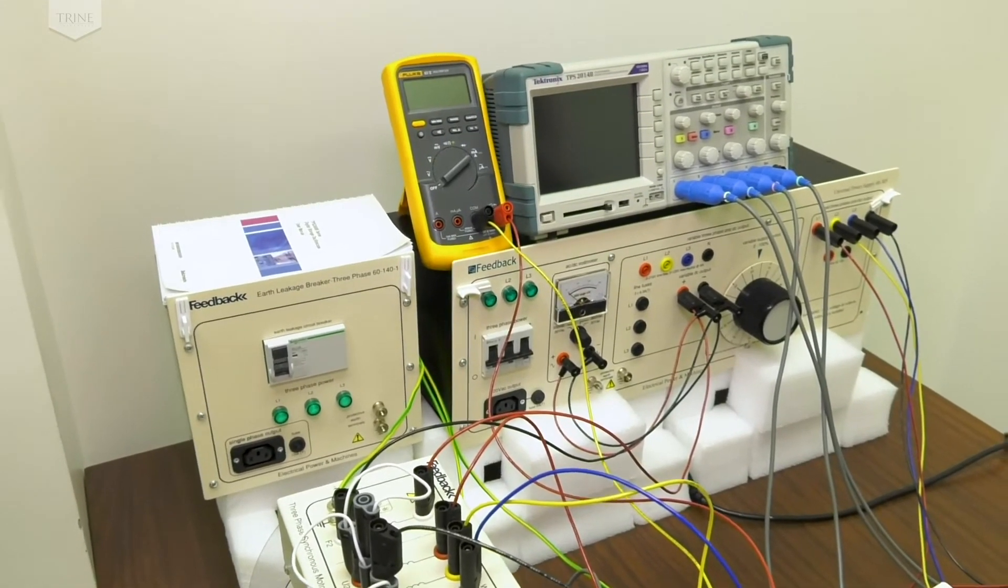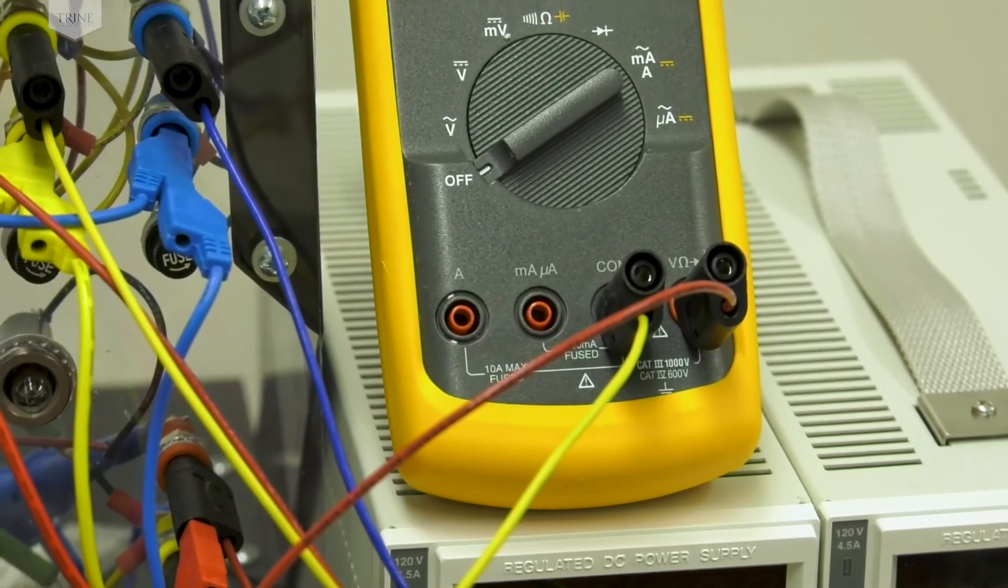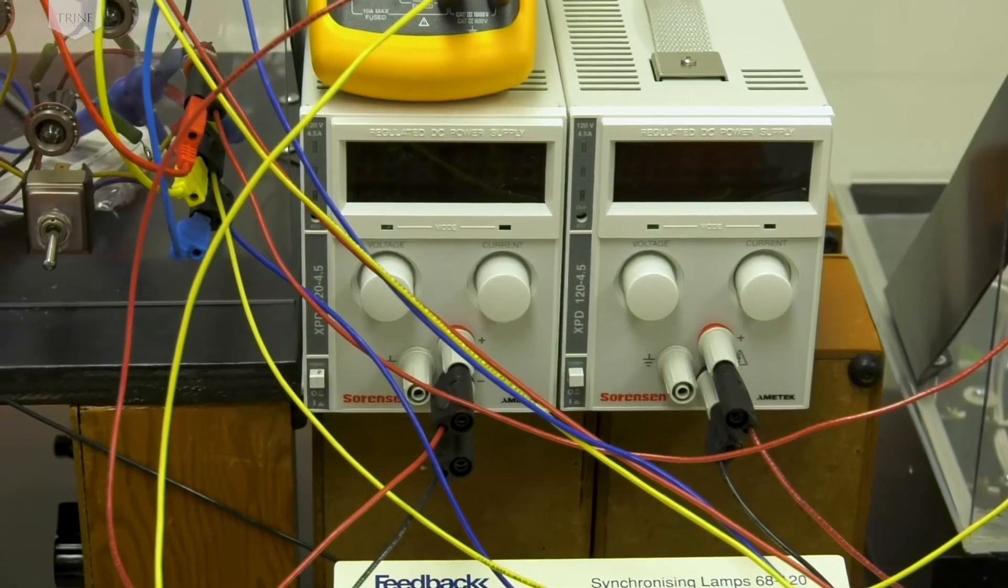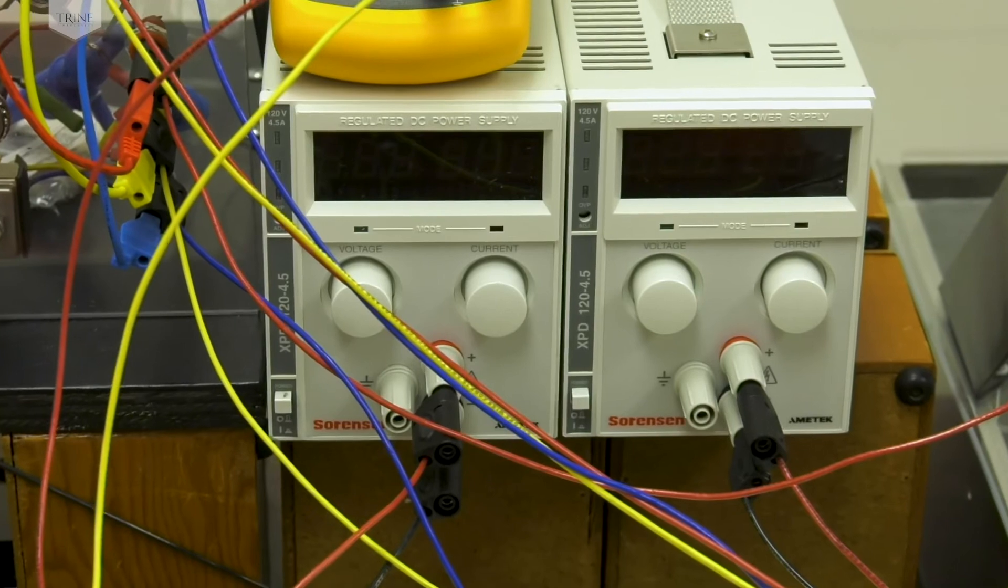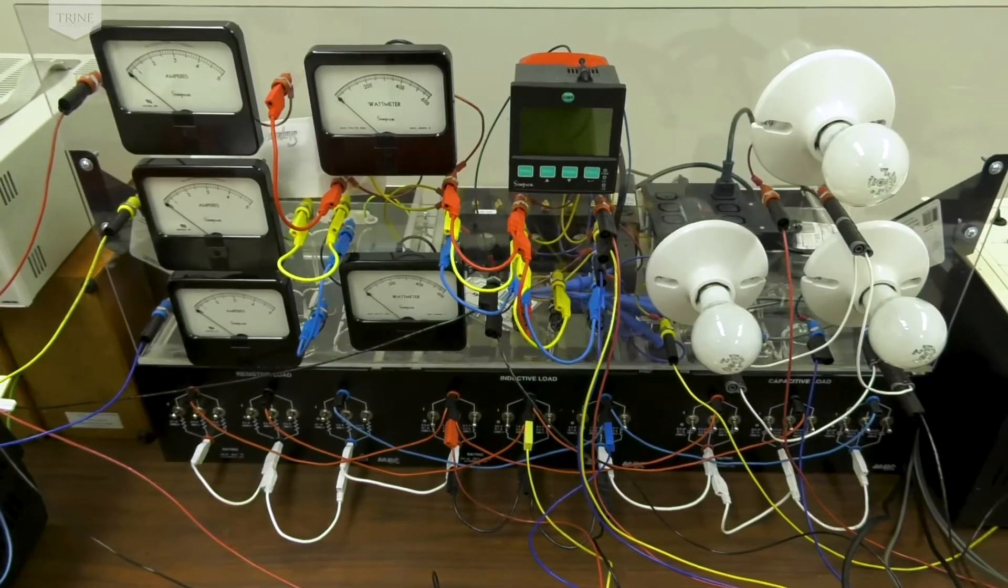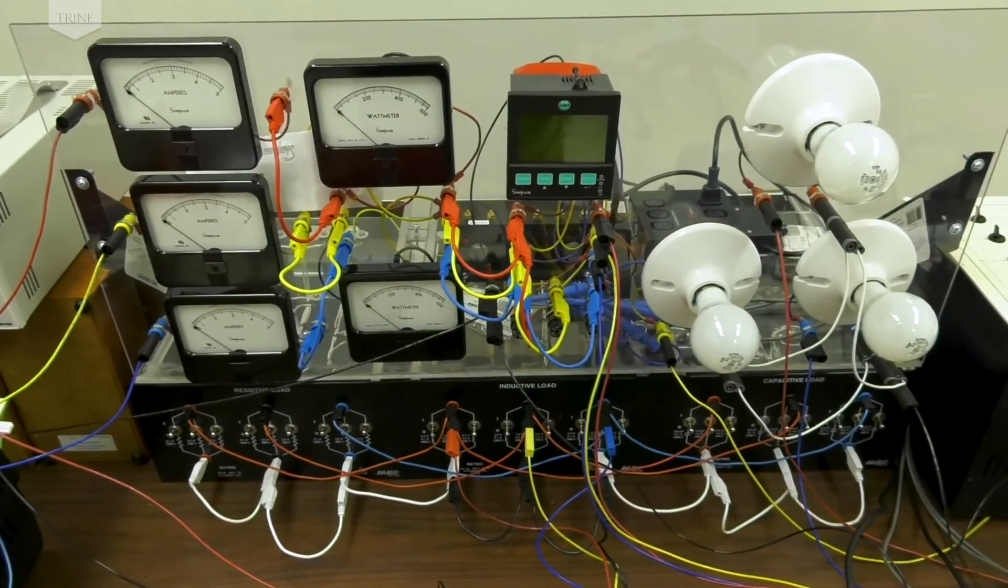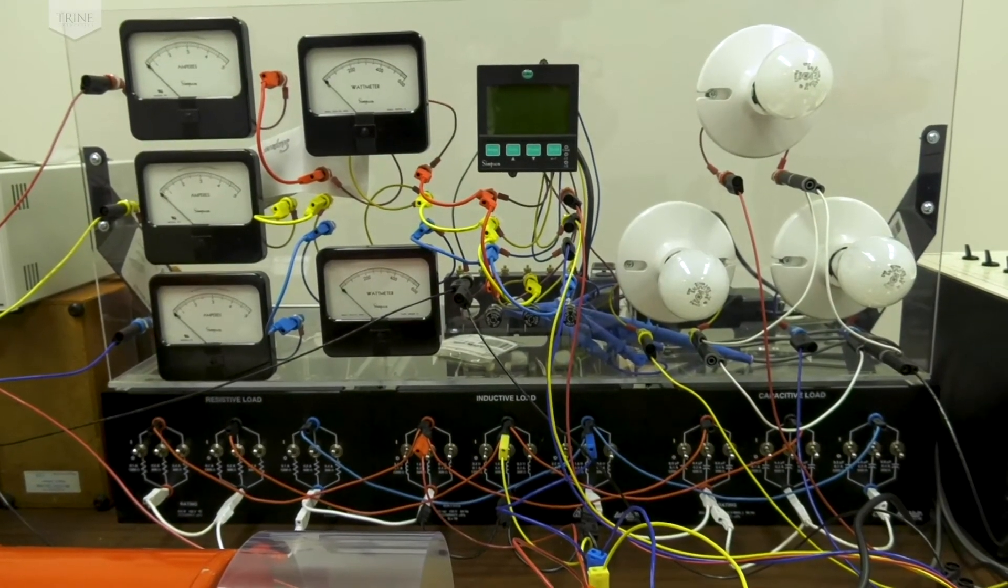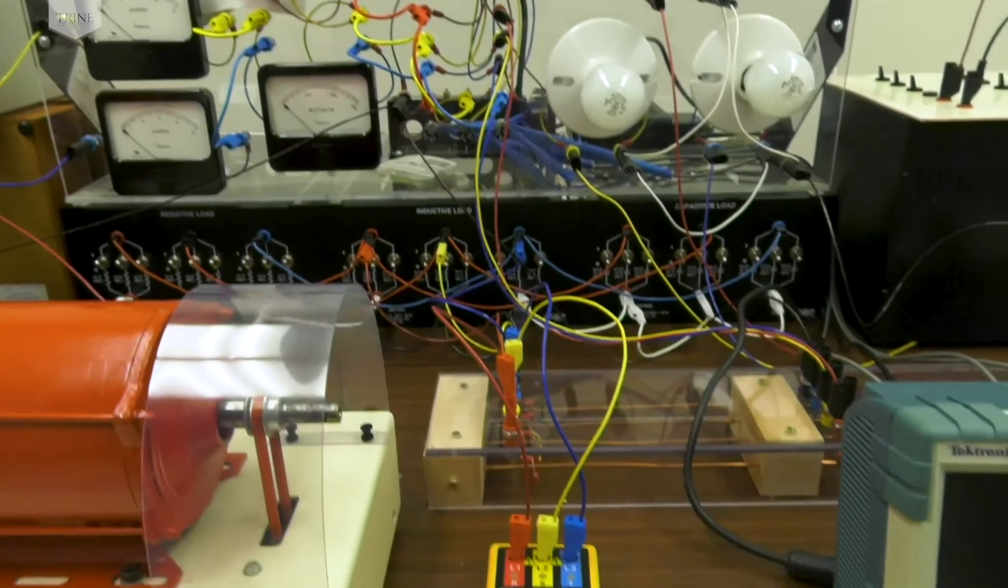Two synchronous machines with driving motors that can bring the machine up to speed can run as motors or generators. Generally, one runs as a motor and the other as a generator, with the drive motor operating the generator at 3600 RPMs. The machines include rotation meters so students can verify the rotation of the machines.